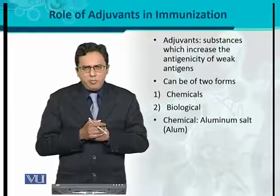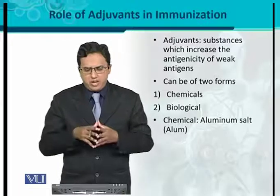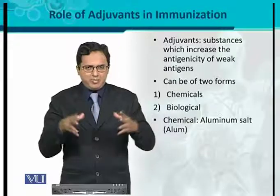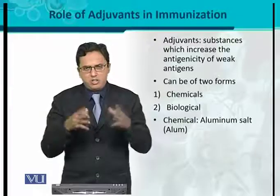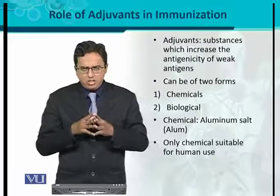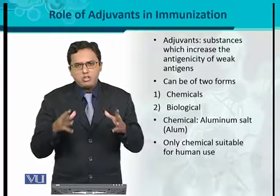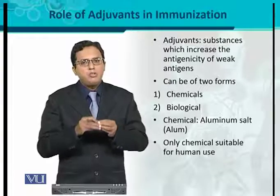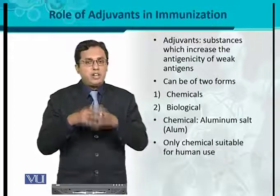Chemically, the most important adjuvant considered as an approved and safe adjuvant is aluminum salt, or alum. It is used in combination with different antigens. If you mix an antigen with alum and use it, it can increase the antigenicity or immunogenicity of that particular antigen. Alum is the only chemical considered appropriate for human use as it has no significant toxicity. We must always consider the toxicity factor when choosing an adjuvant, because a toxic adjuvant would cause damage to the host rather than providing protection.